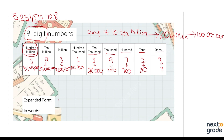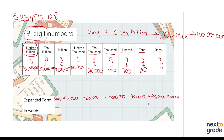Now we will write the expanded form. The expanded form is: 500,000,000 + 20,000,000 + 3,000,000 + 100,000 + 20,000 + 9,000 + 700 + 20 + 8. This is how we write the expanded form of this 9-digit number.